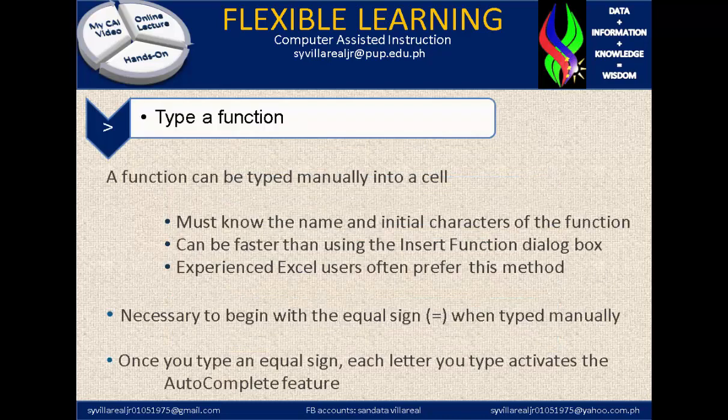A function can be typed manually into a cell — you must know the name and initial characters of a function. It can be faster than using the insert function dialog box because you already know the initial characters of each function. Experienced Excel users often prefer this method because it is fast. It is necessary to begin with the equal sign when typed manually. Once you type an equal sign, each letter you type activates the autocomplete feature.